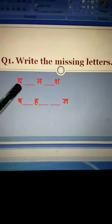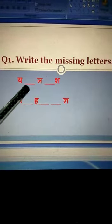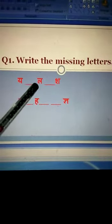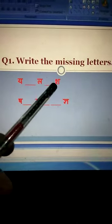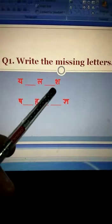Children, ya la in between, which letter is missing? Ra. La dash sha in between, which letter is missing? Wa.